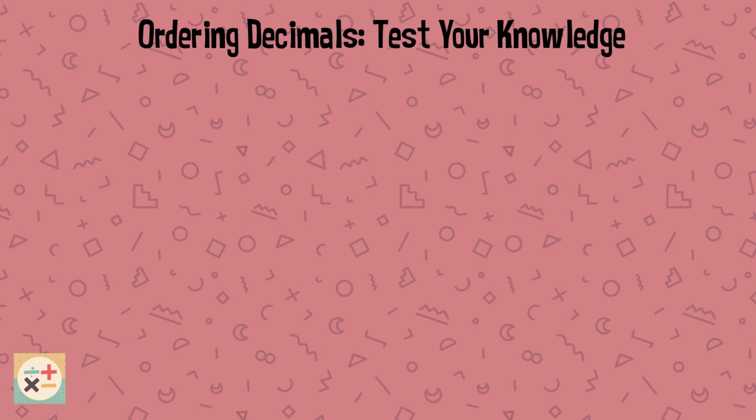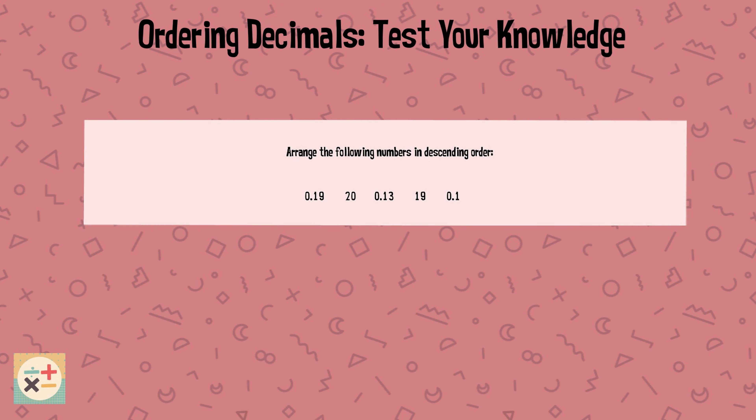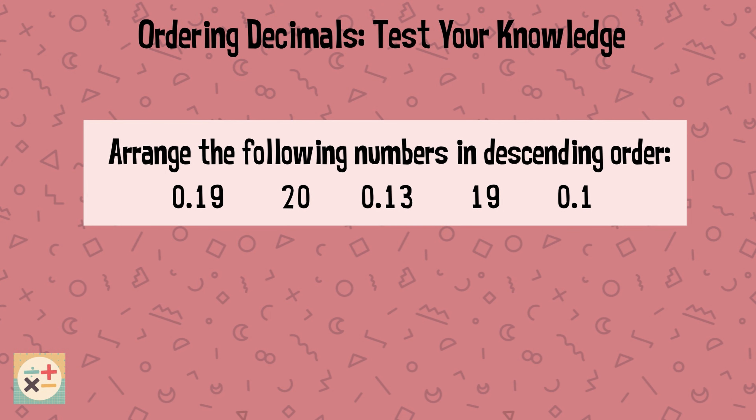Question 6. Arrange the following numbers in descending order: 0.19, 20, 0.13, 19, and 0.1.